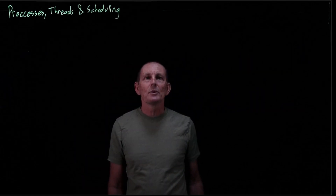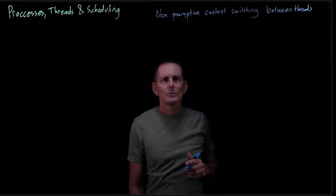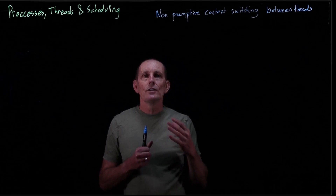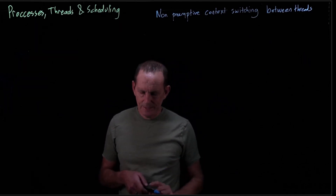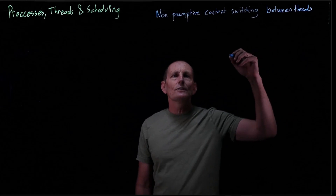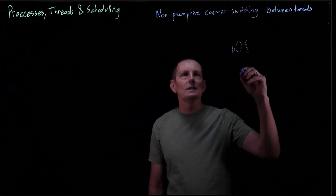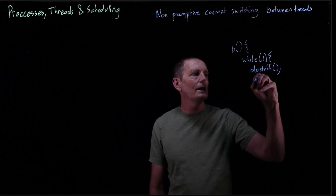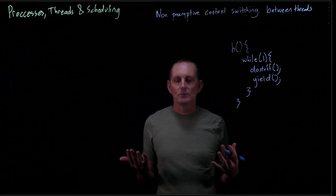Let's talk now about non-preemptive context switching between threads. Non-preemptive context switching means that the thread explicitly gives up control when it's ready to, to another thread. Let's look at an example with two threads executing different code. Looking at thread B: it has a loop, does some stuff, and then calls yield. Yield is our explicit call that says we're willing to give up the CPU to another thread at this time.